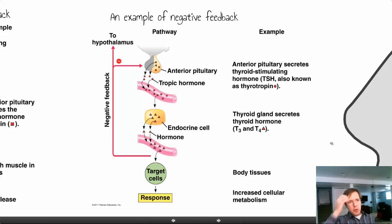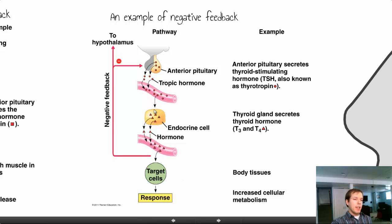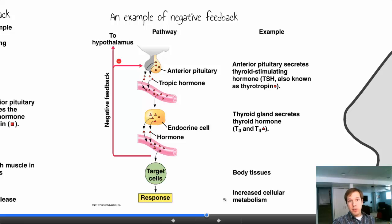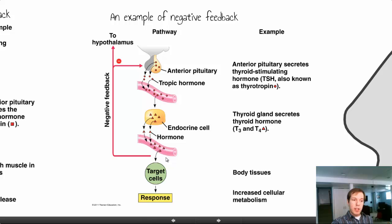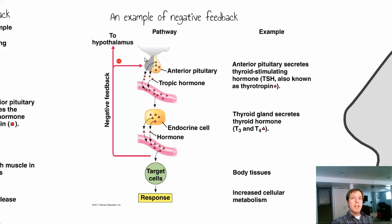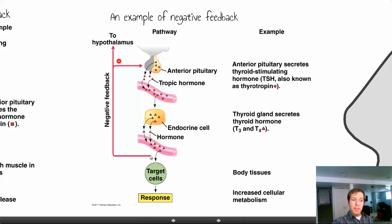For negative feedback, this is usually in response to some change that needs to return to a normal condition. The hypothalamus sends a signal to the pituitary gland to make a hormone, which is released and goes to its target cells. For example, epinephrine from the adrenal gland next to the kidney goes to target cells to increase metabolism. Once the hormone is in the blood, feedback goes back to the hypothalamus telling it to stop — the presence of the finished product tells the brain to stop production because enough has been made.